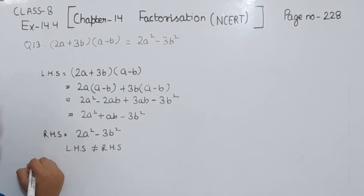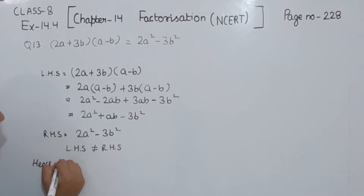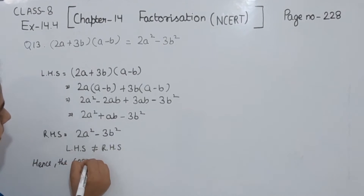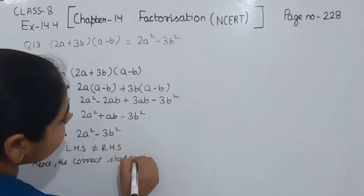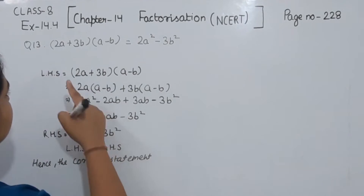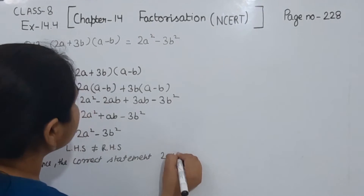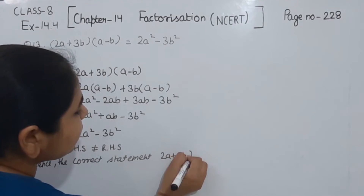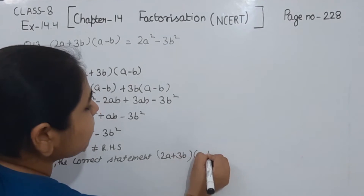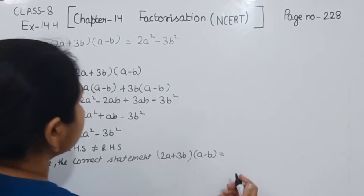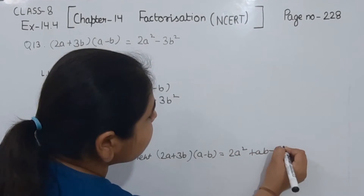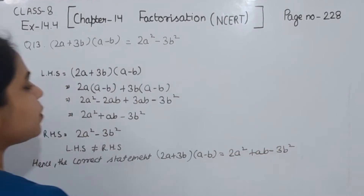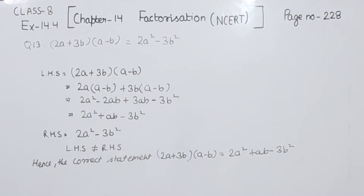Now we have to write the correct statement. Hence the correct statement is: (2A + 3B)(A − B) = 2A² + AB − 3B². This is the correct statement for equation number 13.